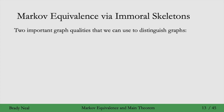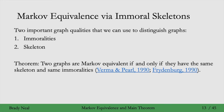There are two important qualities of graphs we can use to distinguish graphs based on the conditional independencies they encode: immoralities, which we saw are special, and the skeleton of a graph. We've built up intuition for these two things, and that leads us to this very important theorem: two graphs are Markov equivalent if and only if they have the same skeleton and the same immoralities. If you feel you have no intuition for this, I recommend going back and re-watching the sections on why immoralities are special and on skeletons.